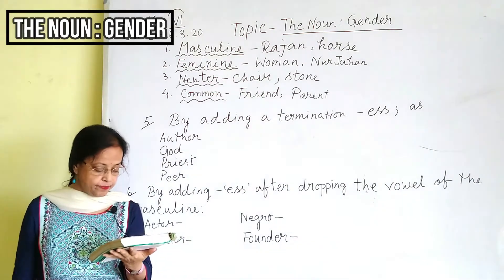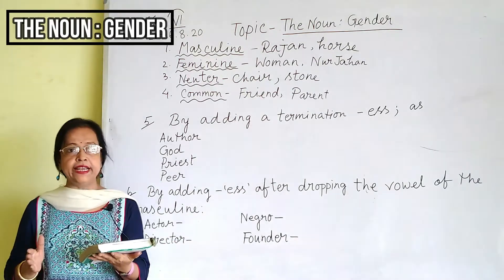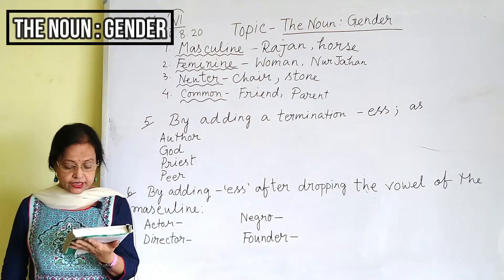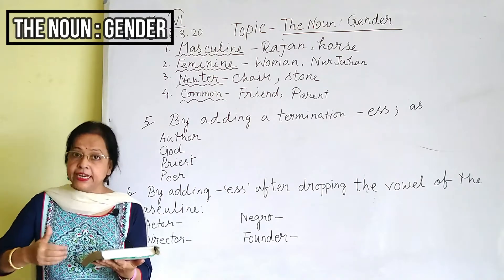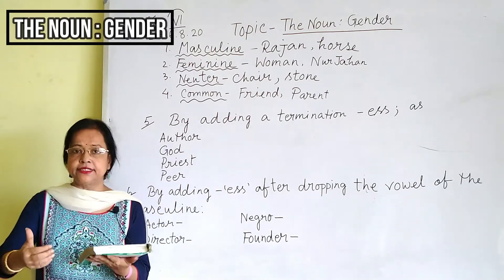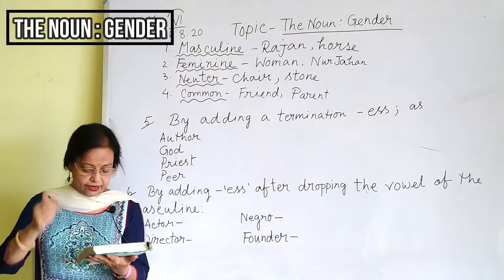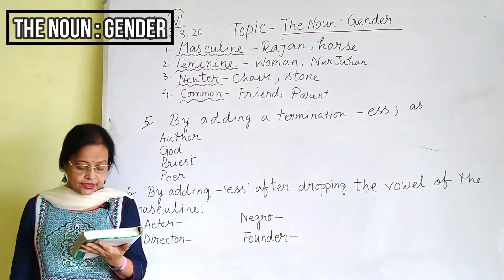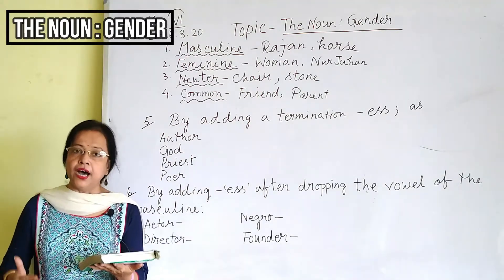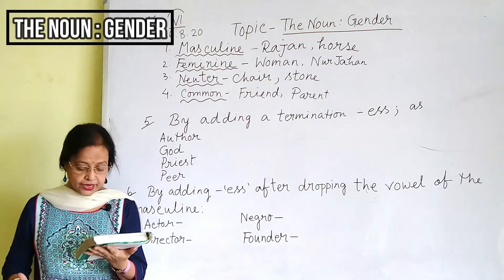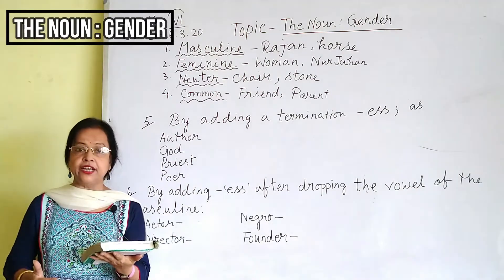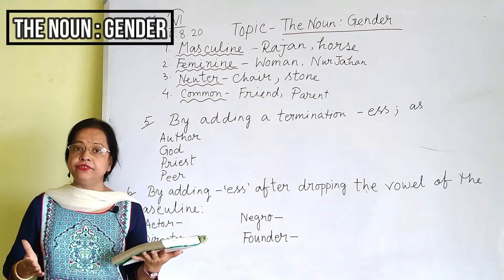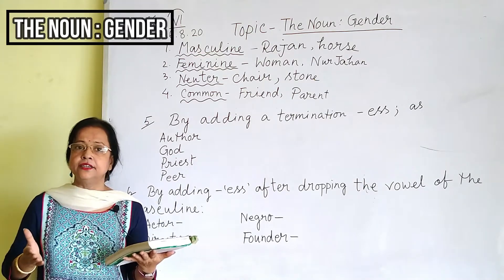Objects associated with beauty and gentleness are regarded as female. For example: the moon, the earth, spring, nature, and charity all refer to the feminine gender.